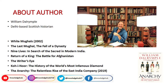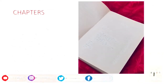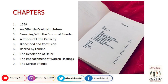The Anarchy is basically the story of the relentless rise of the East India Company. The book has been divided into nine chapters and we will discuss the summary chapter by chapter. Chapter number one is titled 1599, which is basically the time period when the East India Company was created as a joint stock company. It was created by a royal charter issued by Queen Elizabeth I and passed in the British Parliament.